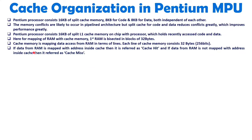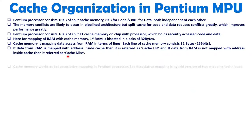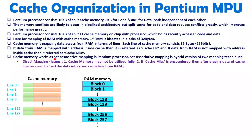If data from RAM is mapped with an address inside cache, it is referred to as a cache hit. When the Pentium's MPU accesses data, it accesses it from cache memory. If the data is already mapped from RAM and available in cache, that is a cache hit. But if the MPU requests data from some address and it is not available in cache mapped from RAM, that is a cache miss. When a cache miss occurs, we need to load that data from RAM into cache.